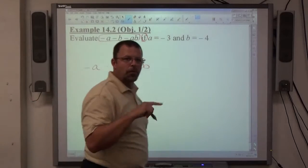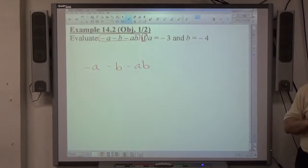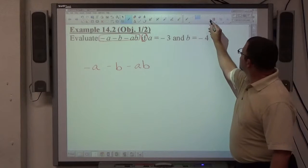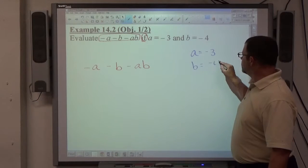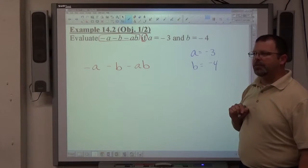That's the first thing I'd write on my paper if I were working this problem out. I'd write down the problem exactly as it's written. Okay, I know that a is equal to negative 3, b is equal to negative 4, and I just substitute in.